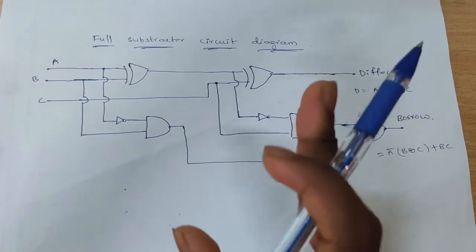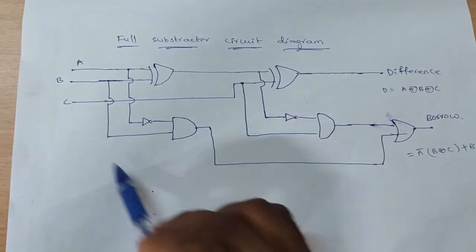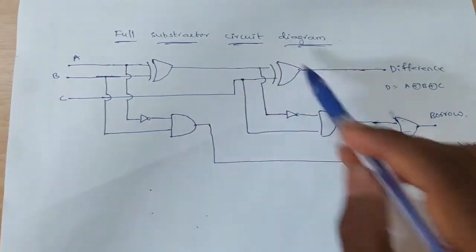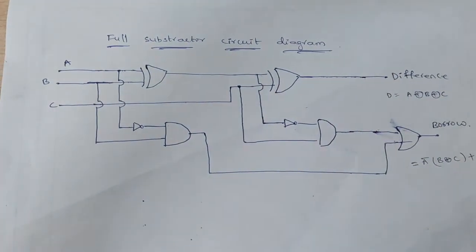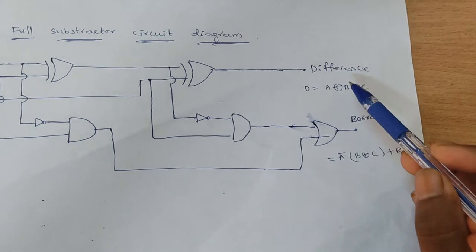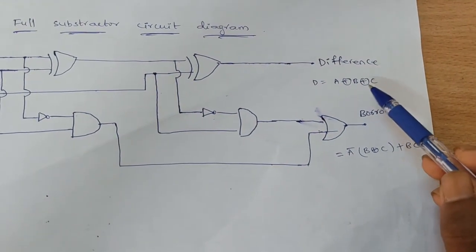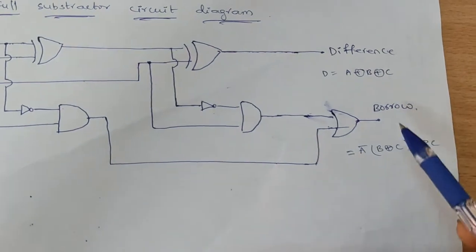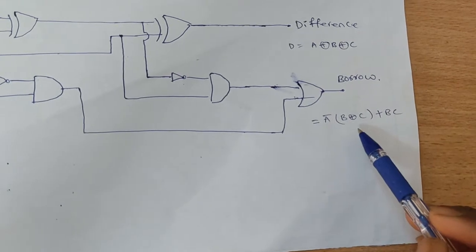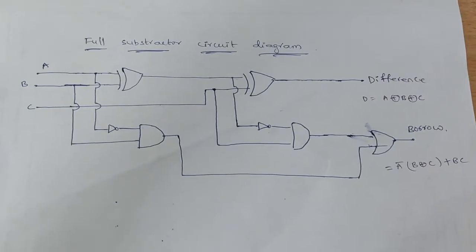This full subtractor is built using two half subtractors — this is the first half subtractor and this is the second. The combination of two half subtractors makes a full subtractor. The expression for difference is A XOR B XOR C, and the borrow expression is A-bar·B XOR C plus B·C.